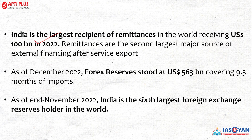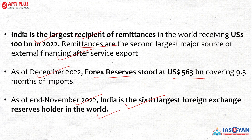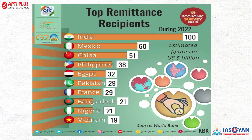India is the world's largest remittances-receiving country, with remittances being the second largest source of external finance after service exports. As of December, forex reserves stood at $563 billion, covering 9.3 months of imports. India is the sixth largest foreign exchange reserve holder in the world. The top remittance-recipient countries in order are: India, Mexico, China, Philippines, Egypt, Pakistan, France, Bangladesh, Nigeria, and Vietnam — important for examination questions framed in ranking format.